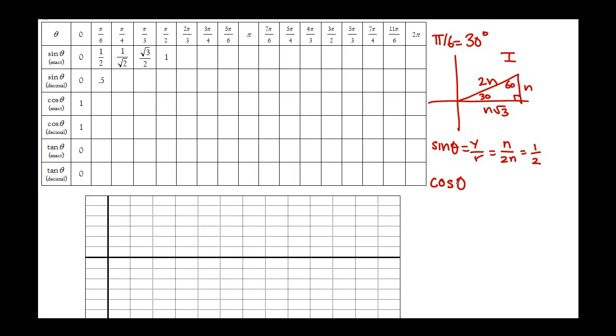The next ratio is the cosine, and that's equal to my x length over my radius, otherwise known as the hypotenuse. So n root 3 over 2n, which is root 3 over 2. The decimal approximation is about 0.866.